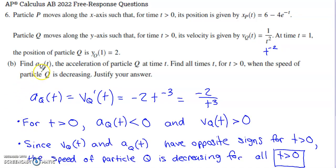Part B, now we need to shift our attention to particle Q. It says find the acceleration function for particle Q at time T. Acceleration is the rate of change of velocity. This is the velocity function for particle Q. I need to take the derivative of this velocity function to build that acceleration function.